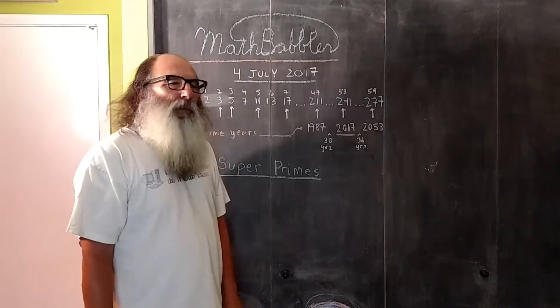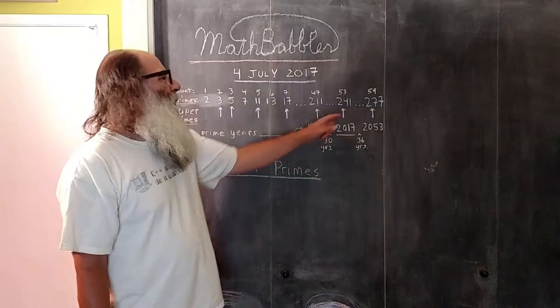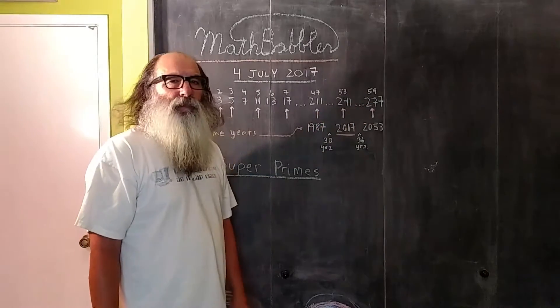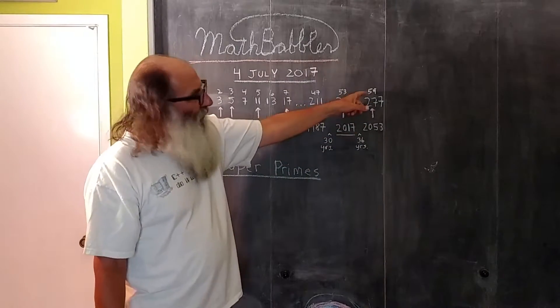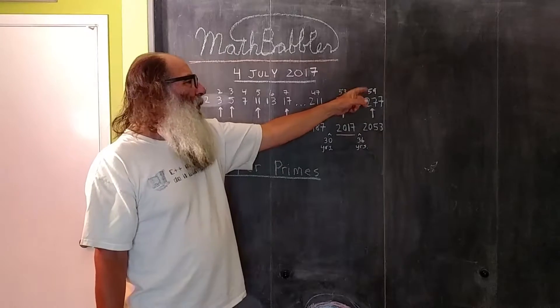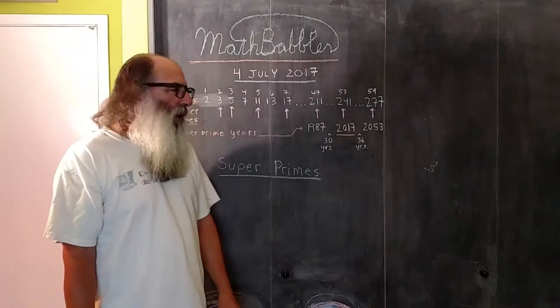The super prime that comes immediately after 241 is 277. 277 is the 59th prime. 59 is a prime number, so 277 is a super prime.